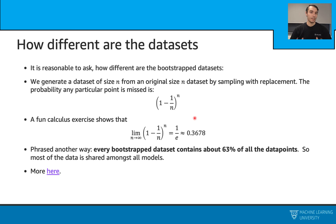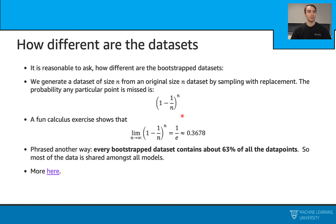Now we have seen how to apply bootstrapping and Bagging together. We can ask: how different are these data sets? Assuming we have an original data set of size n and draw bootstrap samples also of size n, the probability of any particular point being missed in the bootstrapping process can be written as (1 - 1/n)^n. Here, 1/n is the probability of selecting a point, so 1 minus this is the probability of missing it, raised to the power n. As n goes to infinity, this converges to 1/e, approximately 0.3678. Phrased another way, every bootstrap data set contains about 63% of all the data points, so most data is shared among all models.